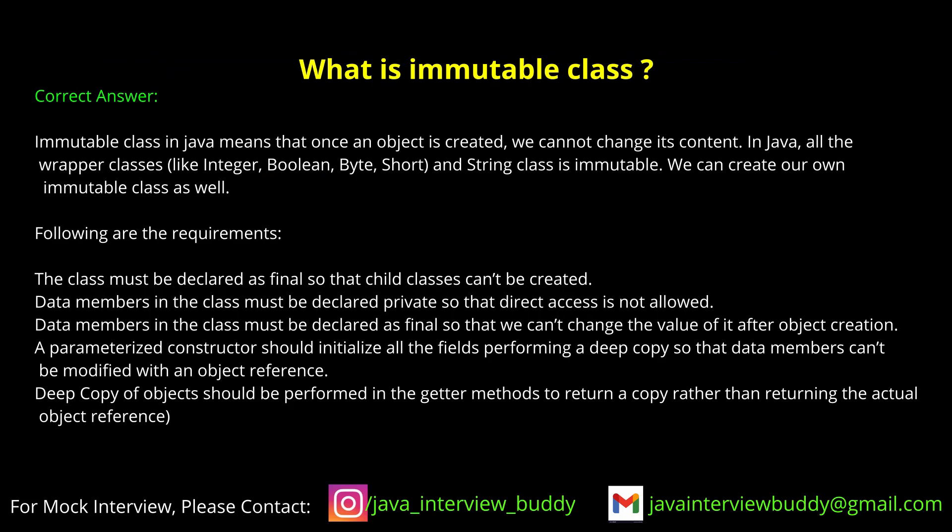What is an immutable class? An immutable class is one whose properties you cannot change at runtime after it has been created. Once you create an immutable class, you are not supposed to change the properties inside it. If you need to change a property, you must create a new instance of that class and then make the change.